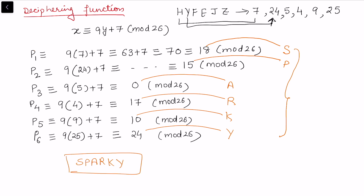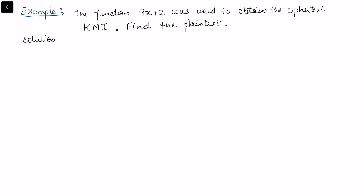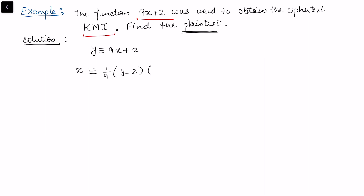We need to use the multiplicative inverse concept to derive the deciphering function. Here is one more example: the function 9x + 2 was used to obtain the ciphertext 'kmi'. We need to find the original plain text. So y ≡ 9x + 2 mod 26, and we need x ≡ (1/9)(y − 2) mod 26, which requires finding 9⁻¹ mod 26.